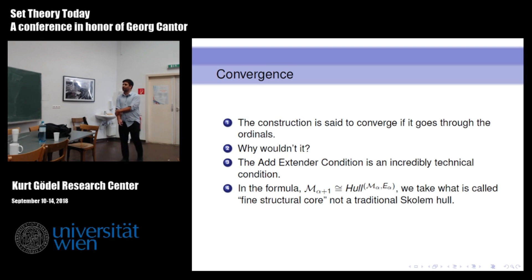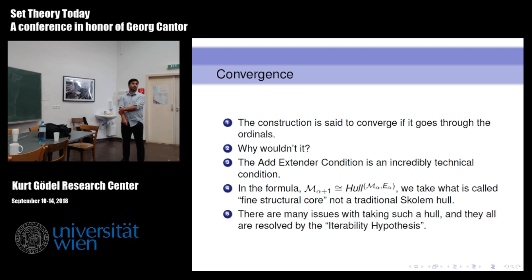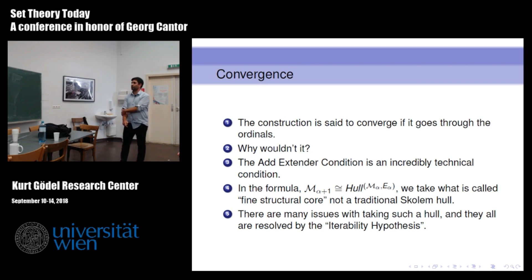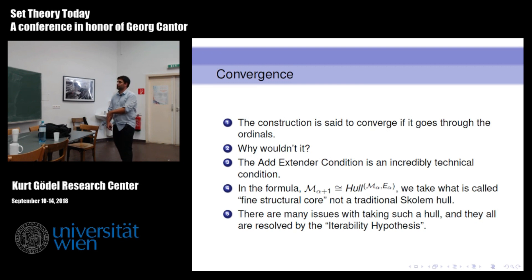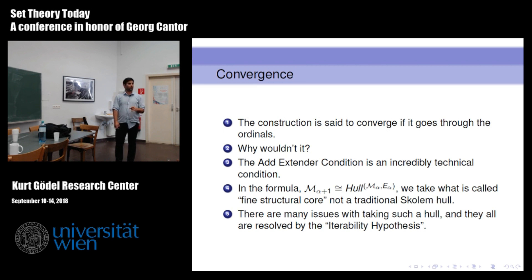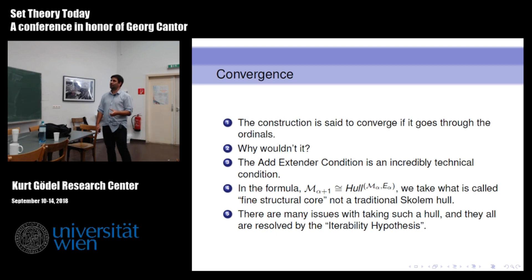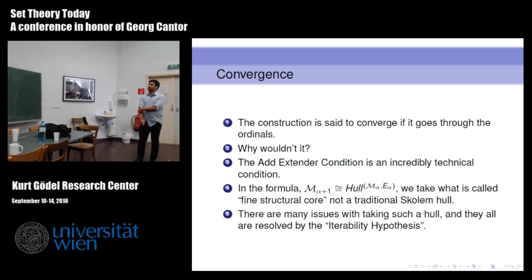Let me at least tell you why I lied. Let's say the construction converges if it goes through all the ordinals. But why wouldn't it? The problem is that M_α with extender E_α is not a model of set theory - it's not any sort of reasonable object. It has very small closure properties with respect to a smaller class of formulas - there's a term called fine structure. So I cannot really take a hull; I have to take what's called a fine structure core. These objects don't usually exist, and there's a lot of work that goes into showing that process can be done. All of the fine structure issues that you'd like to take care of are resolved by something called the iterability hypothesis.